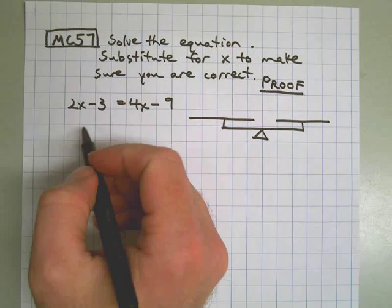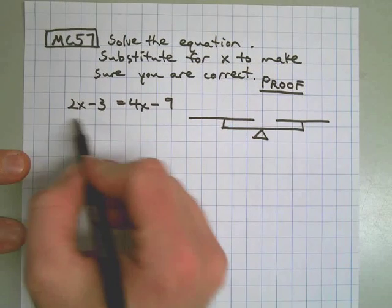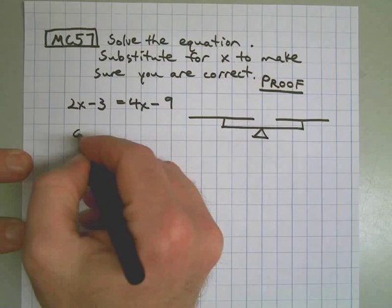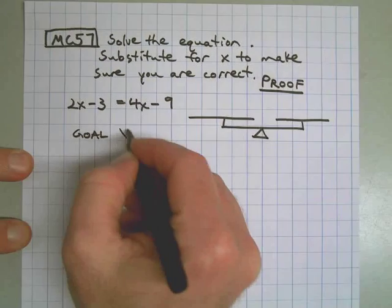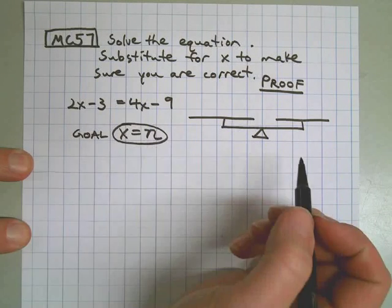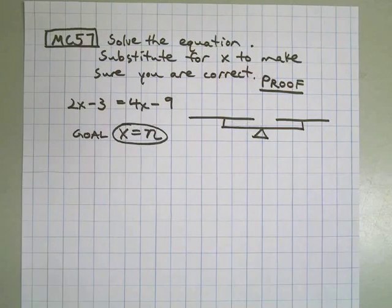All right, our question is, what can I do to both sides here so I can end up with my goal, which is to have x on one side and some number on the other side? It's going to take several steps. First step, as we've talked about in class, is to pick something small and do that first.